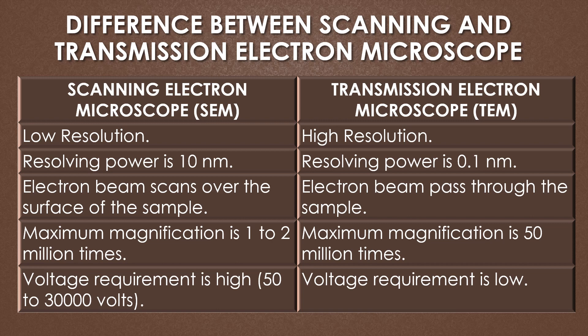By using the SEM we observe the surface of the sample, but by using the transmission electron microscope we observe the intracellular structures present within the cell. The maximum magnification of the SEM is 1 to 2 million times, but the maximum magnification of the TEM is 50 million times. The voltage requirement is high for the SEM, needing up to 30,000 volts, but the voltage requirement of the TEM is low.